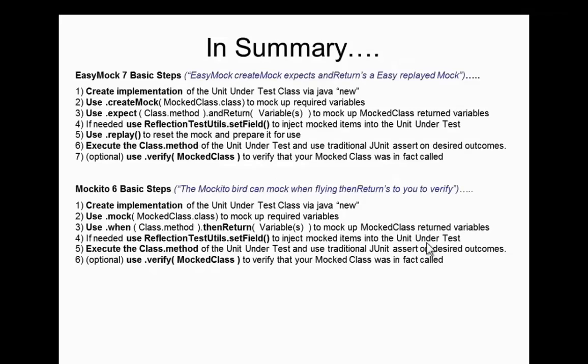Here's a summary of steps with a mnemonic to remember the syntax. For EasyMock: 'create mock, expects and returns, easy replay mock.' For Mockito: 'Mockito bird can mock when flying and then returns due to verify.' The steps are essentially the same — EasyMock has seven steps, Mockito has six because it skips the replay. Additionally, Mockito supports annotations: you can use `@InjectMocks` so Mockito automatically finds and injects your mocks into the proper field, and `@Mock` instead of calling `mock()` explicitly.